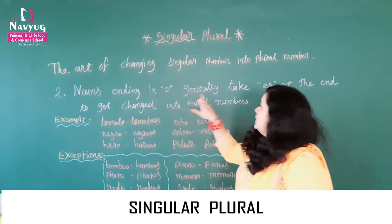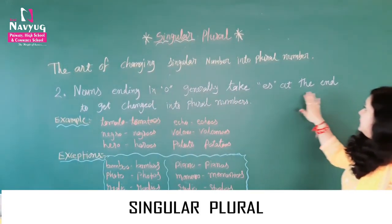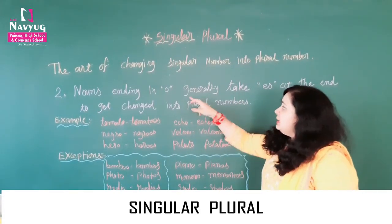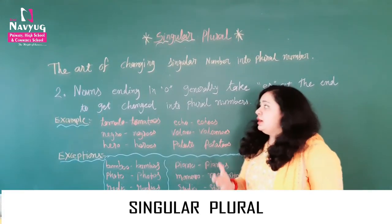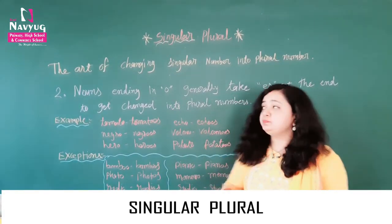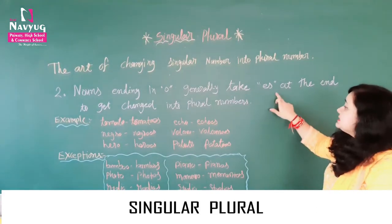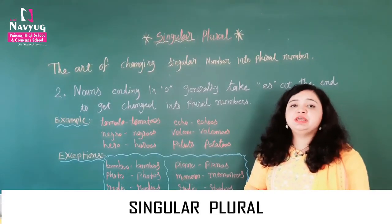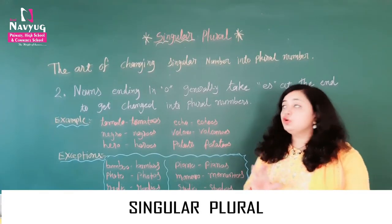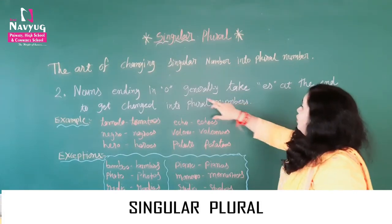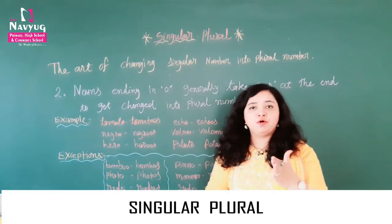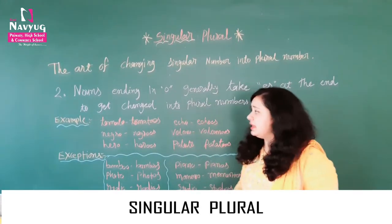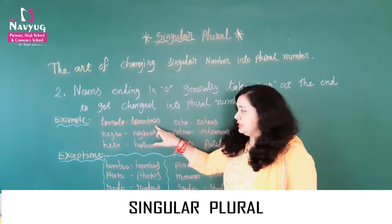Nouns ending in O generally take ES at the end to get changed into plural numbers. Generally, nouns that have O at the end form their plural by adding ES. Example: tomato — tomatoes. ES is added at the end.